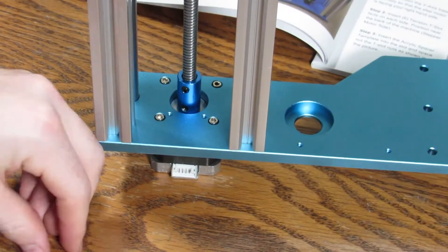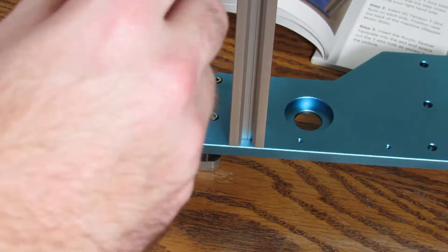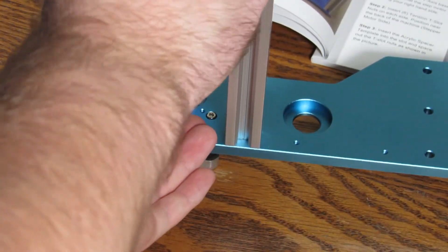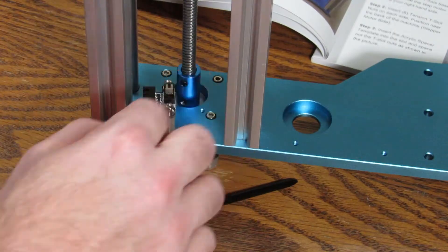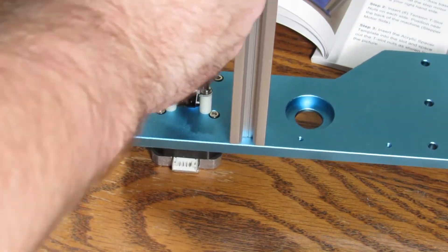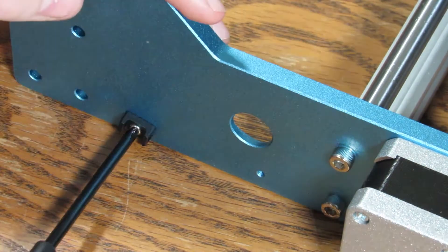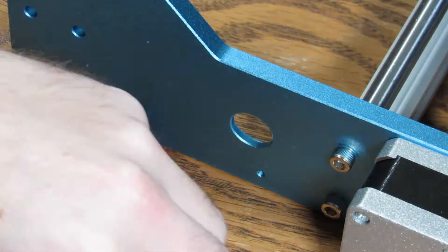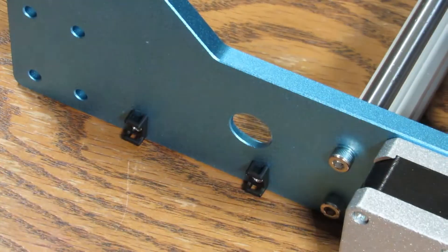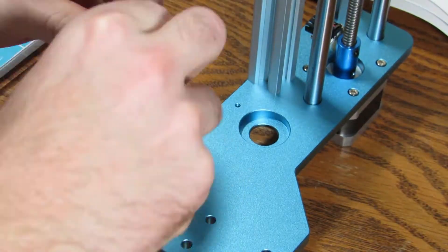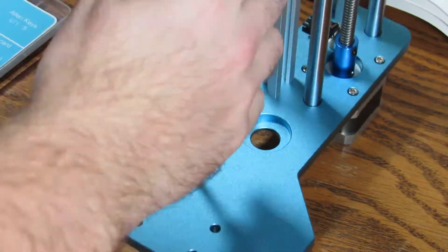Now looking at the gantry, we need to put on the X limit switches. The one here on the motor side gets the two spacers just to kind of offset it there. Those just get screwed in nice and tight. Make sure the limit switch works. Again on the gantry is these little pieces that hold the cable ties. Same thing on the inside of the gantry. All these locations are in the instructions.